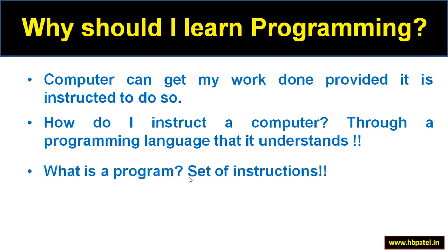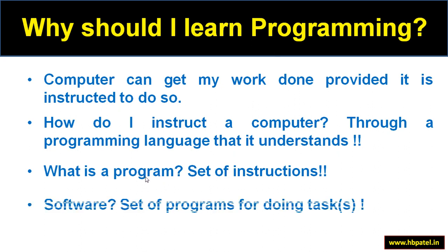So what is a program? A program is nothing but a set of instructions. For example, to add two numbers: first I read those two numbers, second I add them, and lastly I display the result. These three instructions together make a program that gives me the addition of two numbers. And what is software? Software is nothing but a set of programs — for example, a full-fledged ERP system contains multiple programs. A collection of different programs results in software.